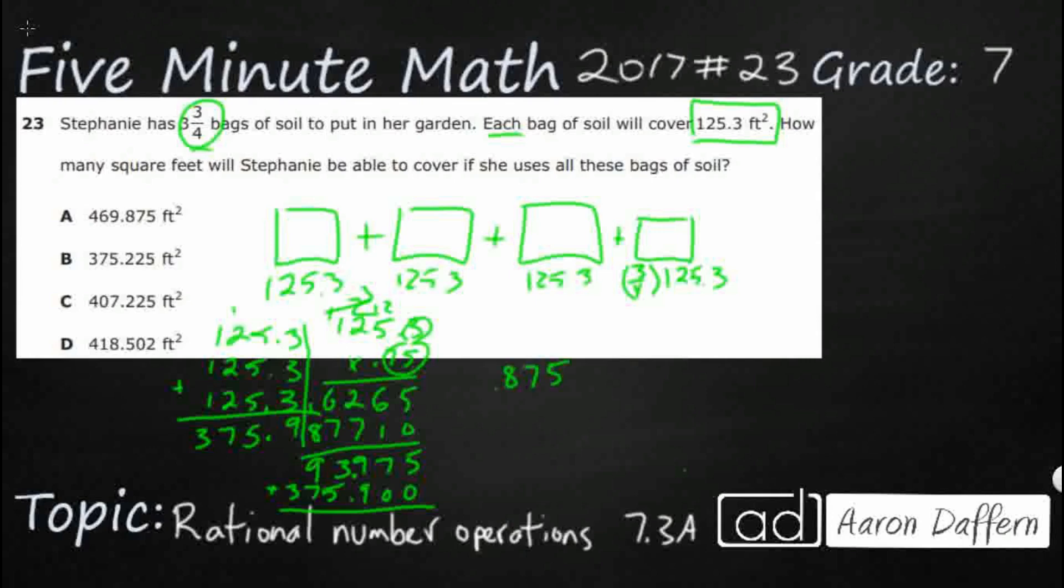And we can go ahead and just add that up. So that's going to be 5, that's going to be 7, that's going to be 18. Carry that 1. That's going to be 9. And then we're going to have a 16, and then it's going to be 4. So we see 469.875. We see that answer there at A.